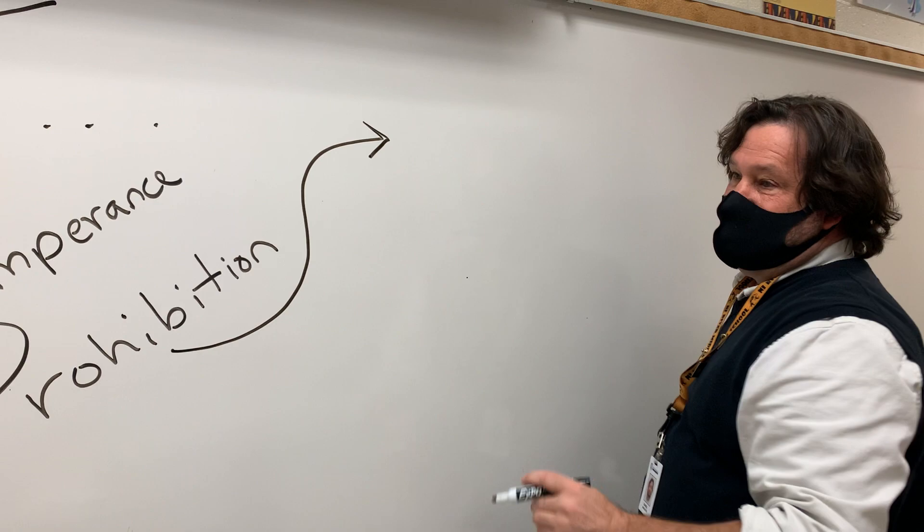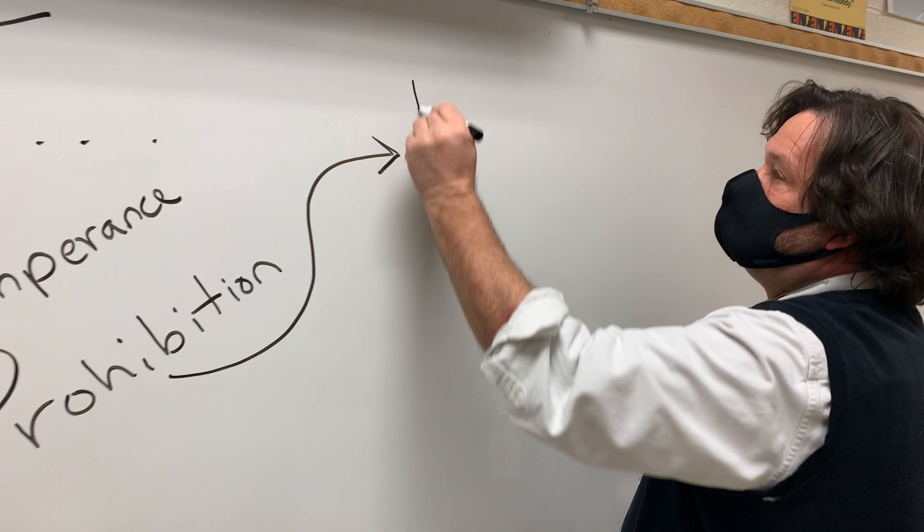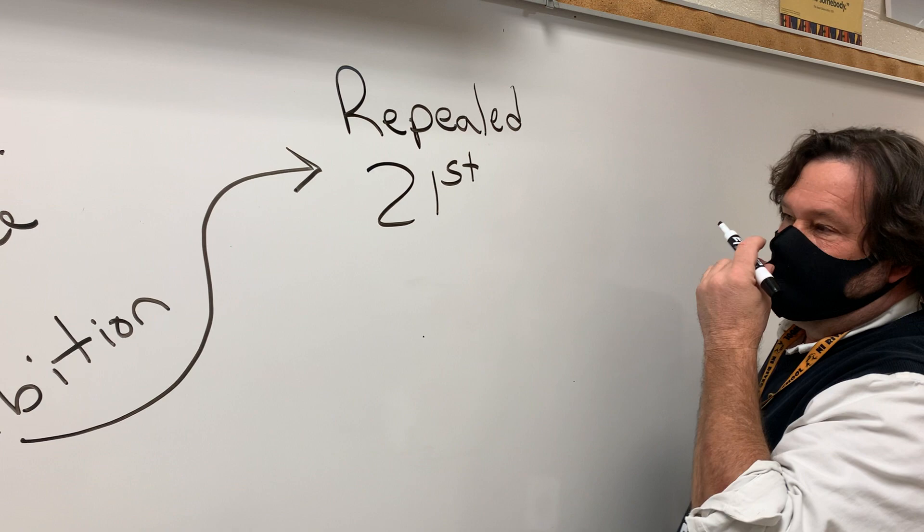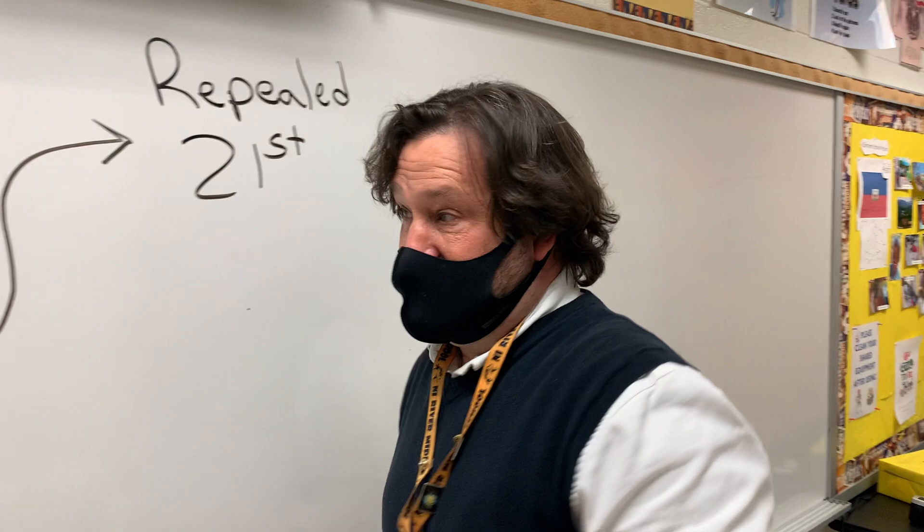That leads us into the next amendment, when they said this frankly didn't work. We're going to use a new key word: 'repeal,' which means take away. So when they took away that 18th amendment, they created a new amendment called the 21st. And that says that alcohol is legal again — you can go ahead and drink alcohol, if you're at the legal age.